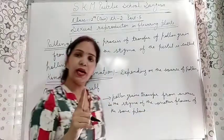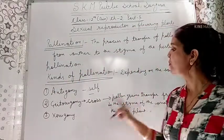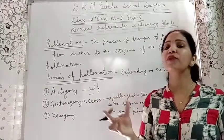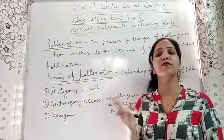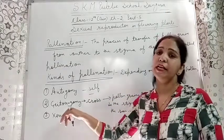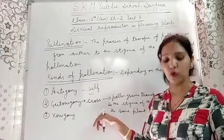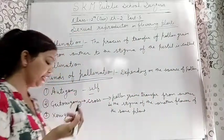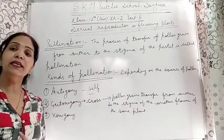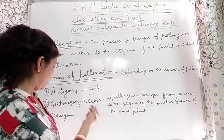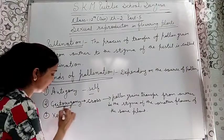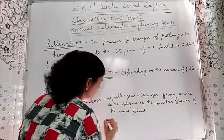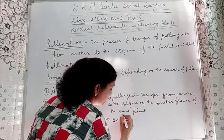In autogamy, one plant has one flower. In geitonogamy, there is one plant but pollination occurs between two different flowers. The flowers involved are genetically similar because they belong to the same plant. This is a type of cross-pollination.